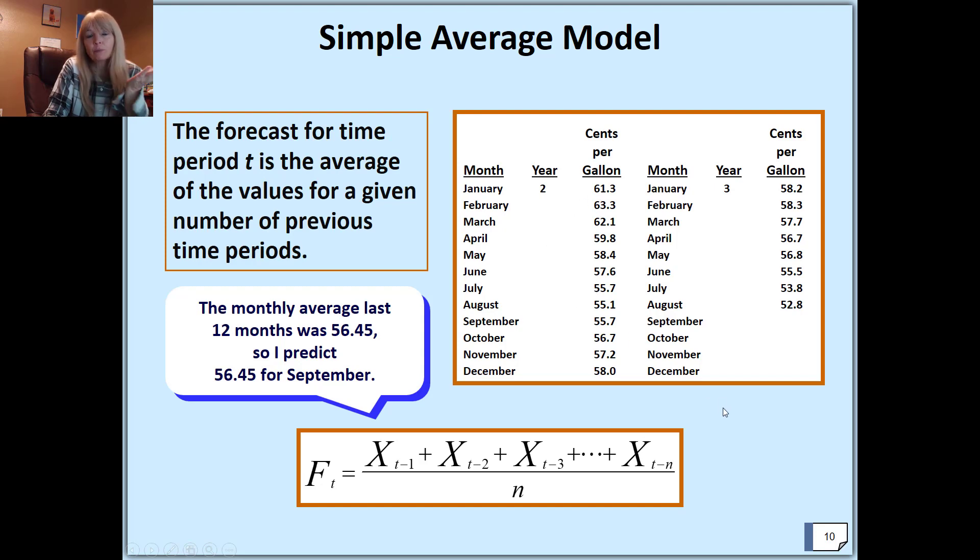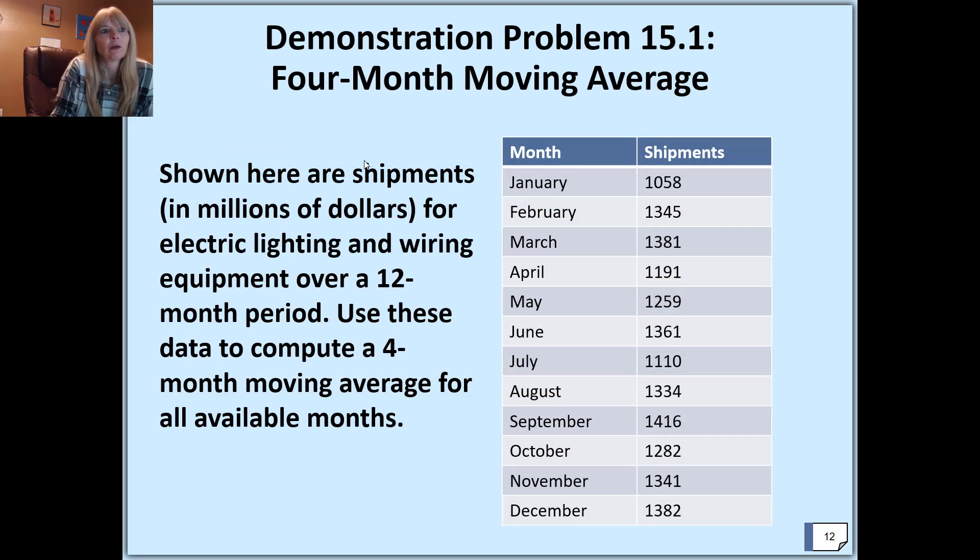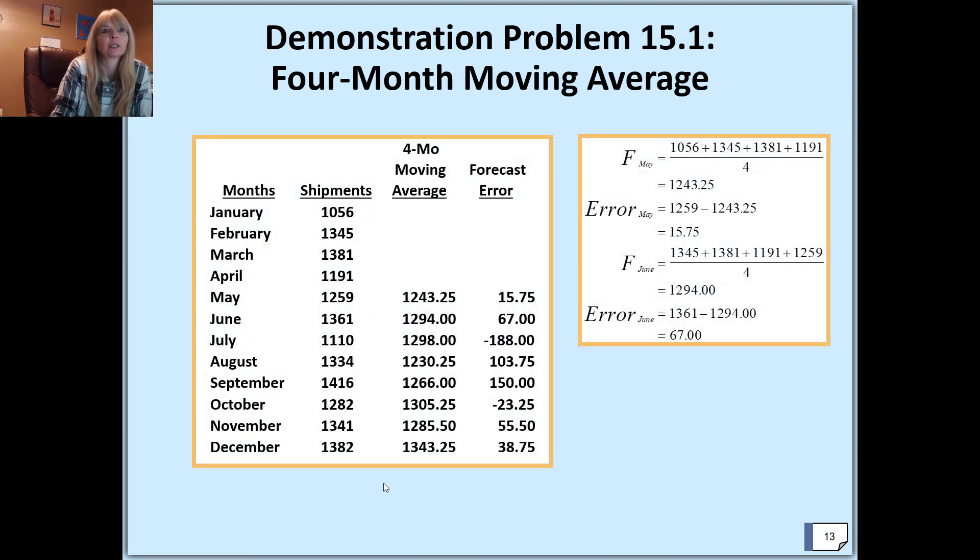The moving average says, let's only look at maybe the last five months instead of the entire period, and then you still average those. Here's an example: if I want to compute a four-month moving average, and I want to figure out next year's January, then I might just go to the four months—September, October, November, December—and do an average of those for my next forecast.